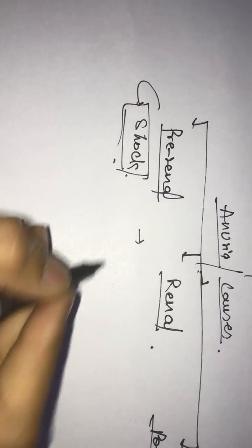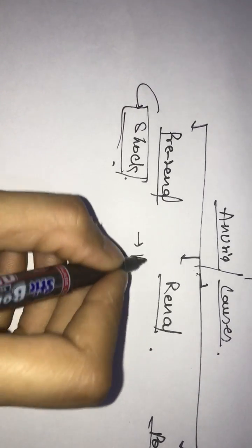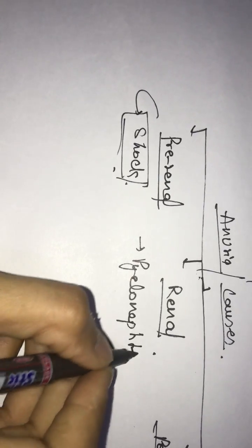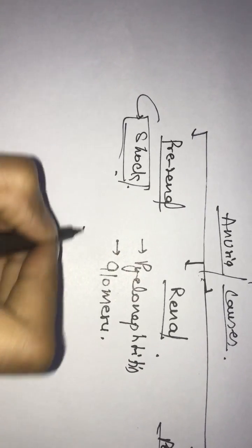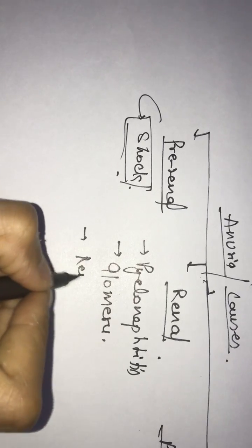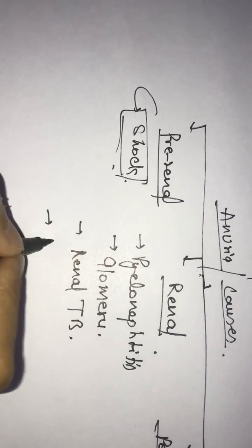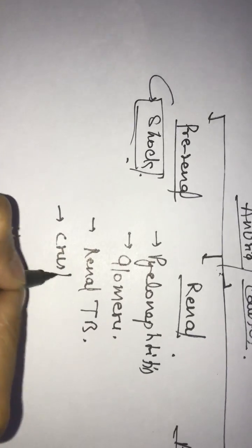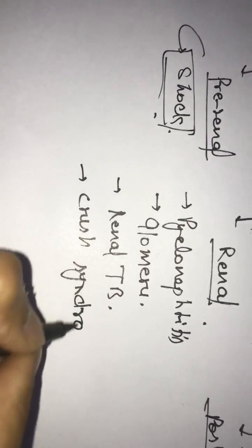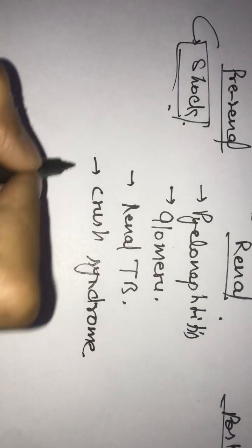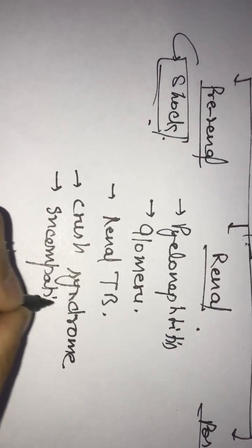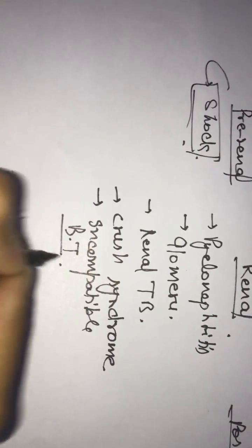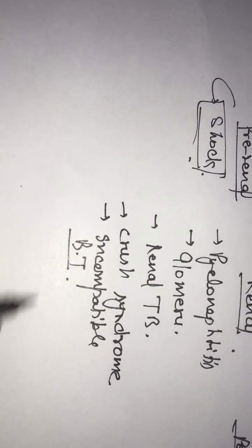If we look at renal causes, we have any infection — neoplasma, pyelonephritis, glomerulonephritis, renal TB, crush syndrome, anuria, and incompatible blood transfusion. Here also anuria is present.